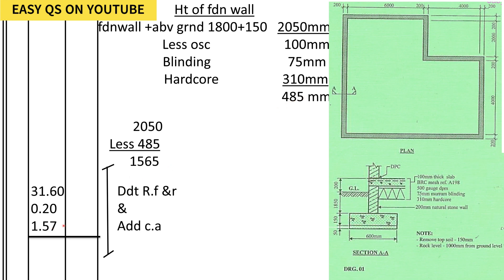The depth below the reduced level is the portion of the wall that will replace the soil. We take the centerline, the thickness of the wall, and the depth below the reduced level to find that volume of soil. This volume represents the soil replaced by the wall. We shall deduct it from refill and ram and add it to cutaway.